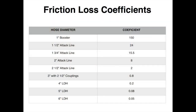To work along with the upcoming examples, you'll need to use the friction loss coefficient table. You'll pick the size of hose line you're using and the coefficient that goes along with it to plug into the formula. You can also find this coefficient table in the download section of our website.